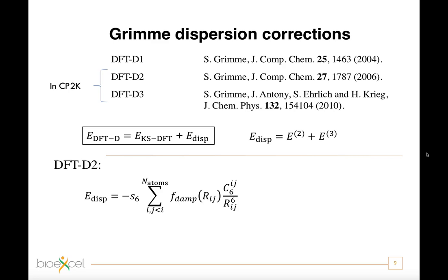Rij is the interatomic distance between atoms i and j. S6 is a global scaling parameter depending on the choice of the employed functional. The C6 values are calculated from the empirical atomic dispersion coefficient according to this expression.